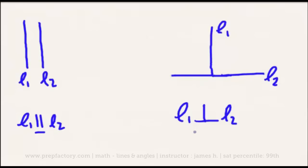Perpendicular lines are notated by this symbol. Perpendicular lines are sort of the opposite of parallel lines — they are lines that touch in such a way that they create right angles. So that's a right angle, as well as that is a right angle. A right angle is an angle of a 90-degree measure.